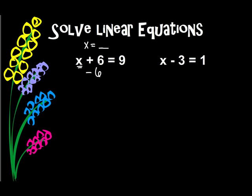Because that will eliminate the 6, or get rid of it. But if I do it to the left side of the equal sign, I have to do it to the right side also. I have to keep this equation balanced.